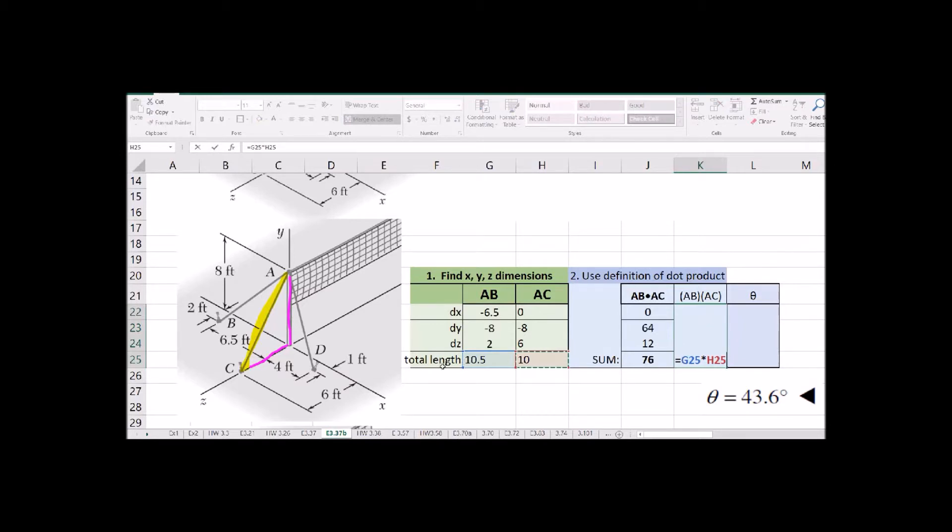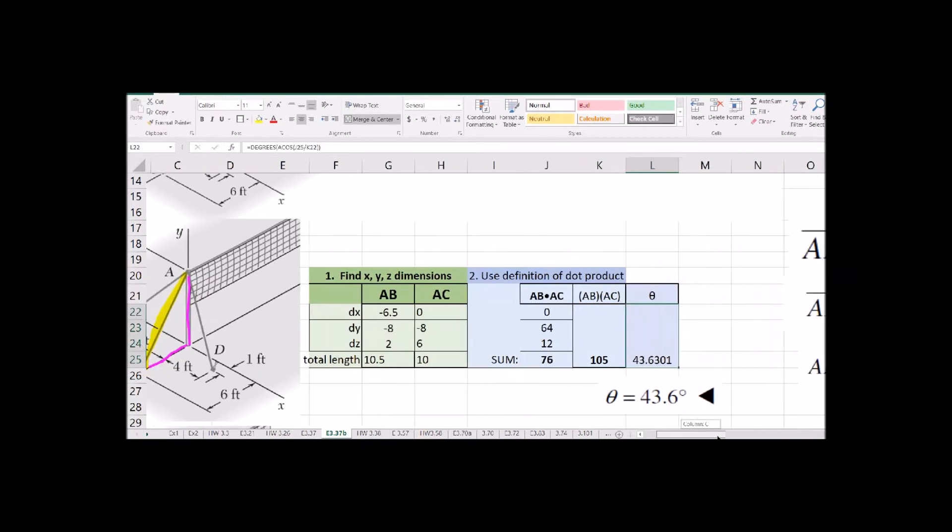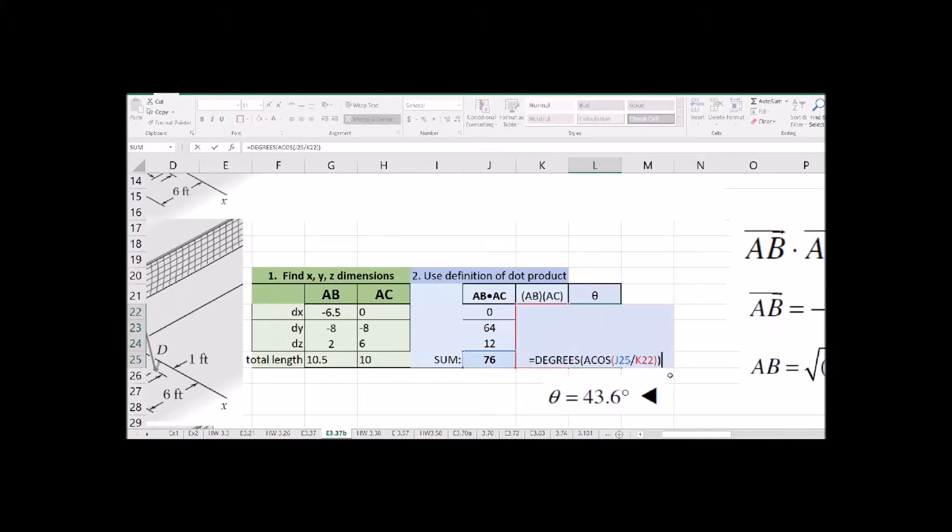And then here's the magnitudes of the length multiplied by one another. And the arc cosine will give you the angle then between those two cables. So that's kind of a nifty thing you can do with dot products.